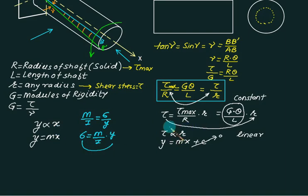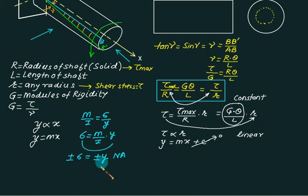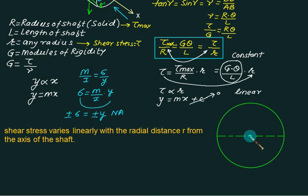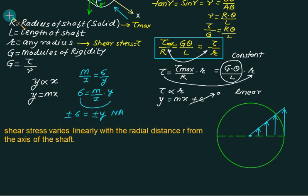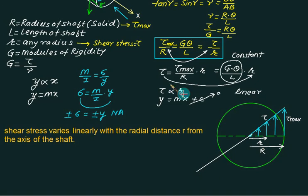Just as the bending stress distribution is linear, so is our shear stress distribution. In bending we have plus or minus Y measured from the neutral axis, but in torsion there is no plus or minus R because if you measure on one side it is R and on the other side it is also R. So everywhere you write only R. At the center, where R equals zero, shear stress is also zero. As the radial distance increases, the shear stress also increases, reaching the maximum value on the outer fiber. Joining these points with a straight line: at any distance r, the corresponding shear stress is tau, and at the outer fiber r equals R, the corresponding value equals tau max.